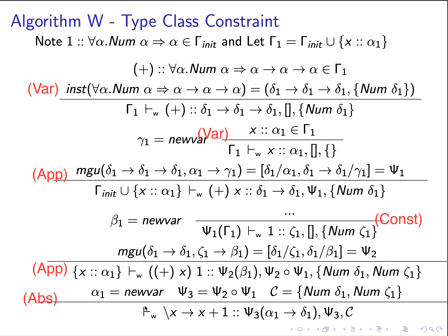Alpha-one is the type of the input variable x. We extend the type environment gamma-init to map x to alpha-one, under which we infer the type of the body x plus one. Since this is an application, we apply the app rule and create a fresh unification variable beta-one to serve as the return type of the function application. We then find the type of the function expression, which is plus applied to x.